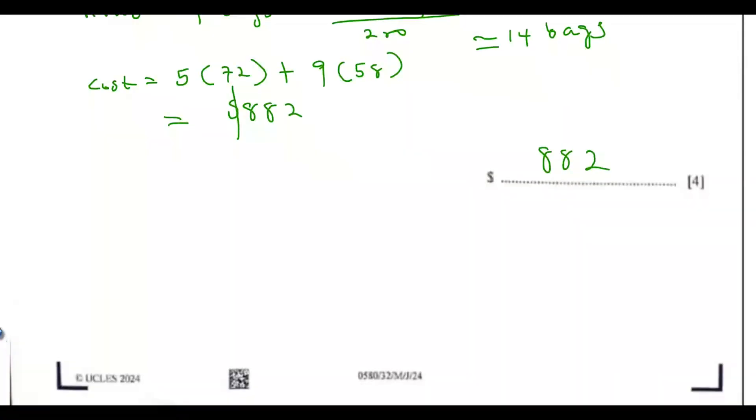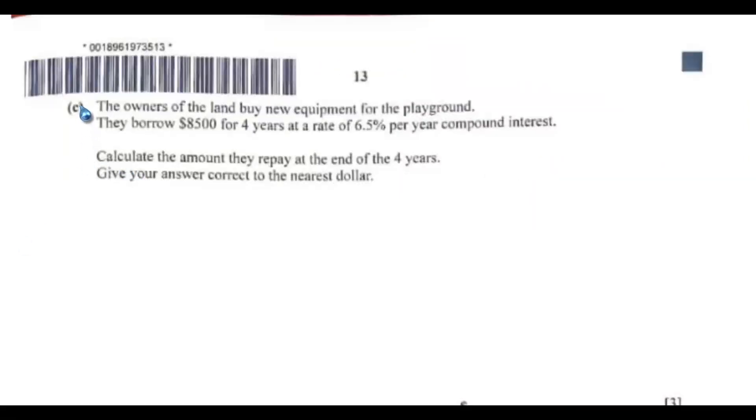So let's go to the next question. Question 7C. The owners of the land buy new equipment for the playground. They borrow $8,500 for four years at a rate of 6.5% per year compound interest. Calculate the amount they'll pay at the end of the four years. Give your answer correct to the nearest dollar. So we have the principle to be equals to $8,500, then the time t to be equals to four years. So the rate equals to 6.5%, which is equals to 0.065.